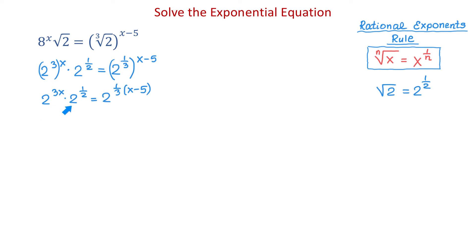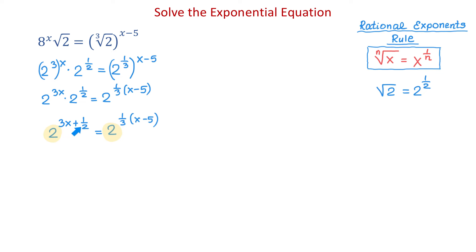On the left side, we will apply the product rule, which tells us that if we multiply two expressions that have the same base, we just need to add the exponents. So we will keep the same base and add 3x and 1 half. Then on the right side we will have 2 to 1 third times x minus 5. Now, once the bases are the same, we will set the exponents equal to each other. So we will write that 3x plus 1 half equals 1 over 3 times x minus 5.